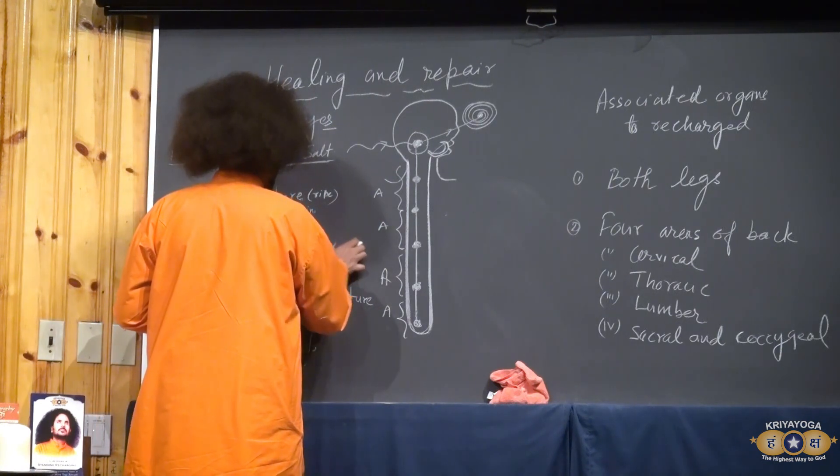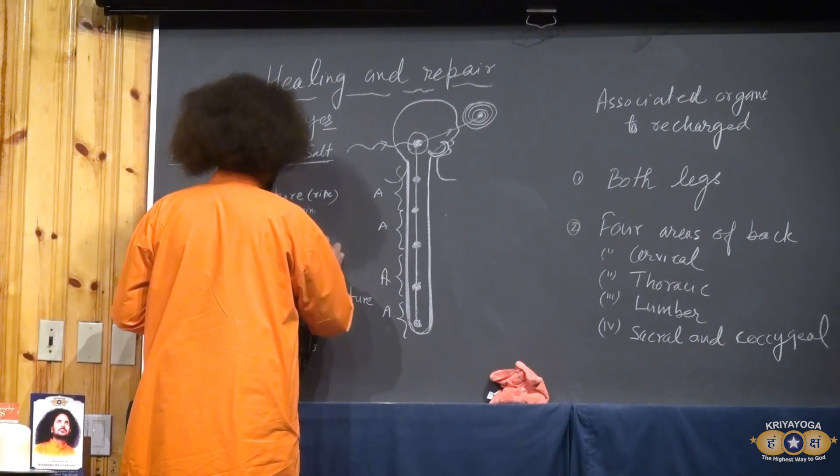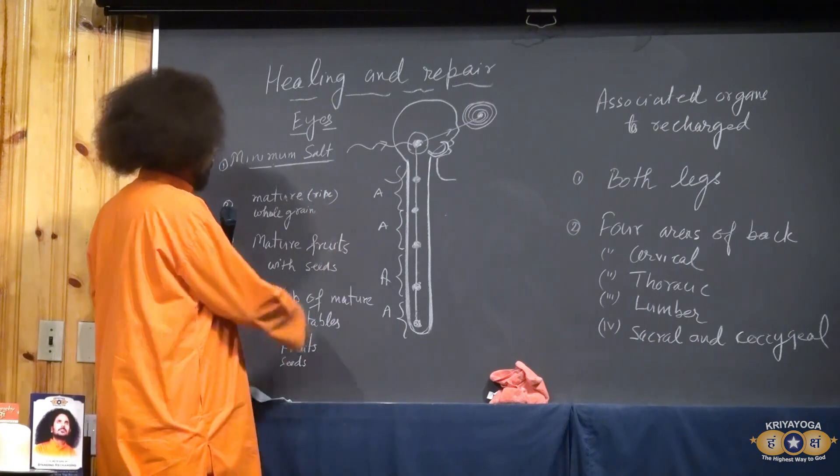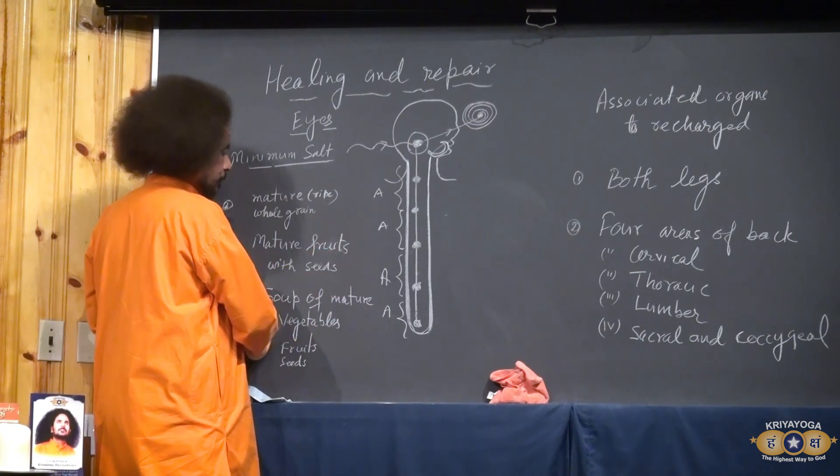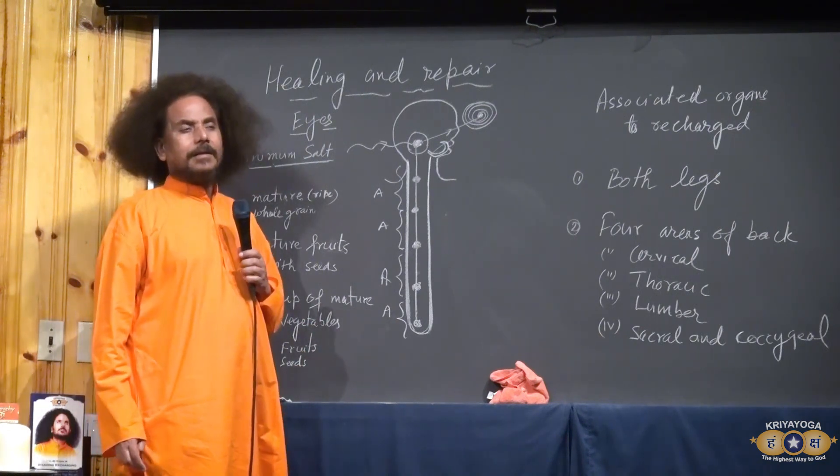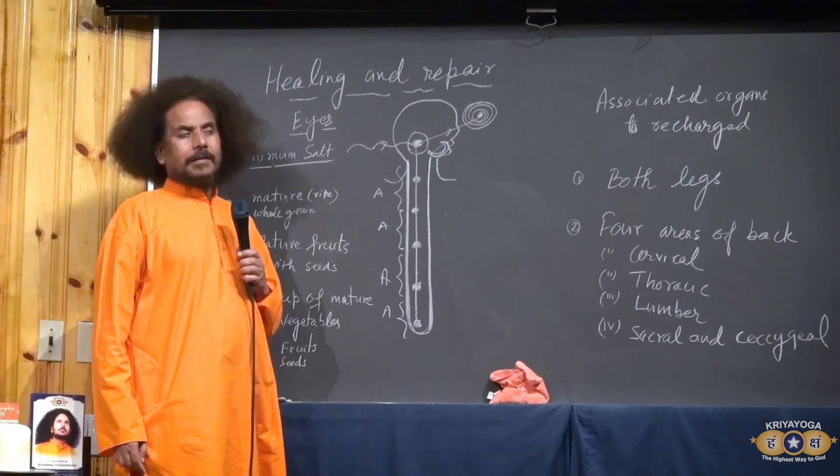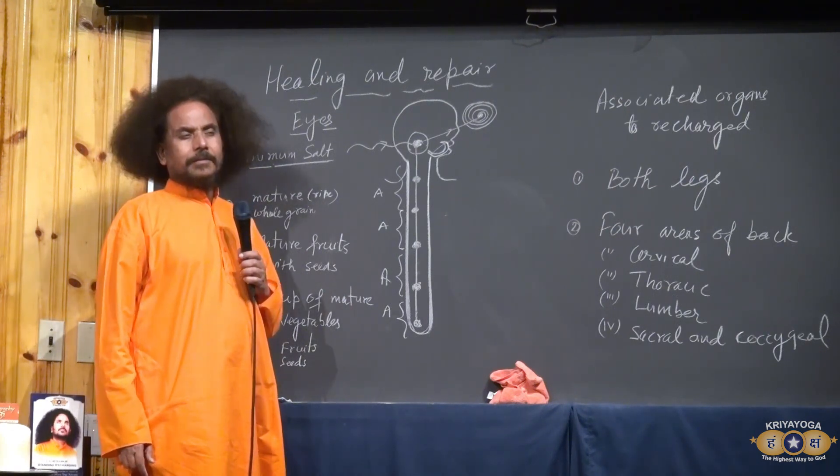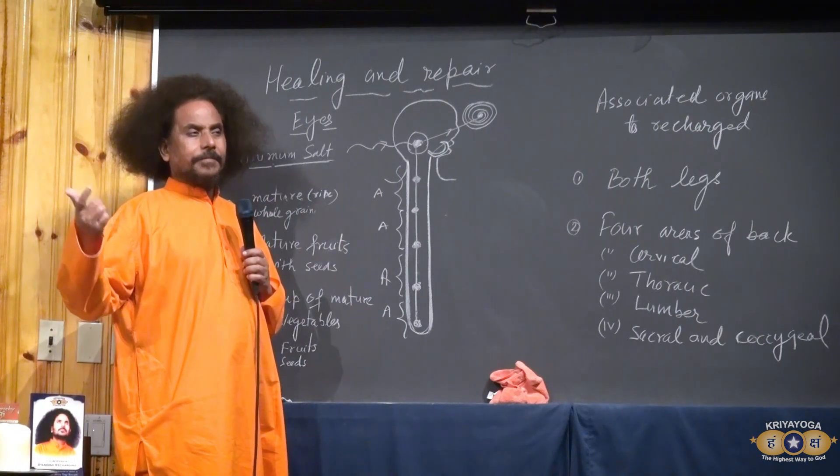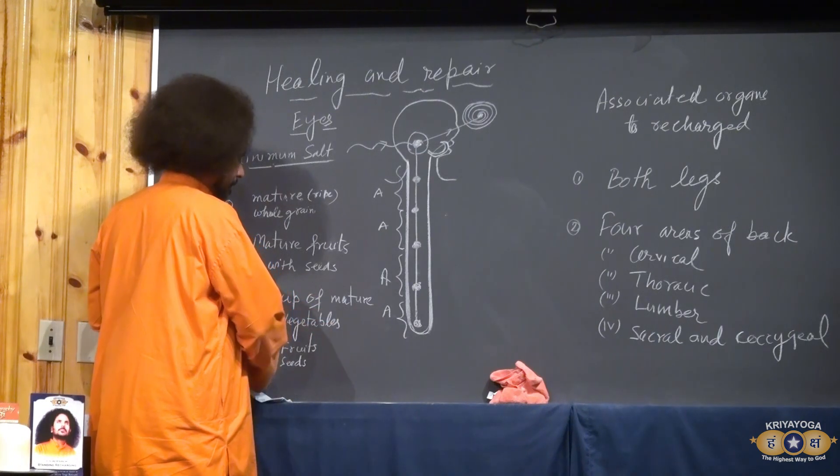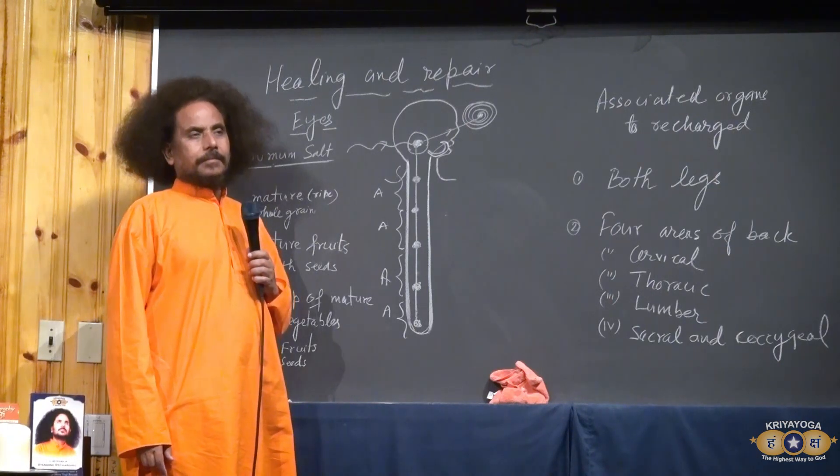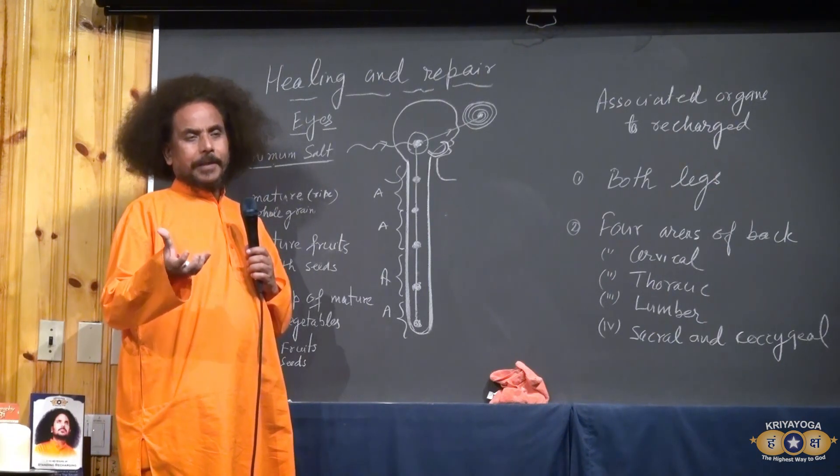Mature fruits. Any kind of fruits which should be mature. What is the meaning of mature? Collect the seed and sow, you will get the tree. Mature fruits with seed. Soup of mature vegetables. What is mature vegetables? Like garlic, onion, turmeric and cassava, sweet potato, potato. And you can find out others. There are few more. That mature vegetables and fruits and seeds. You can make soup also. Better to eat whole, complete things.